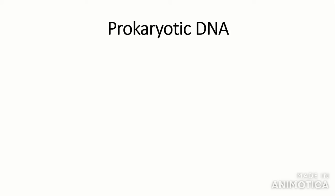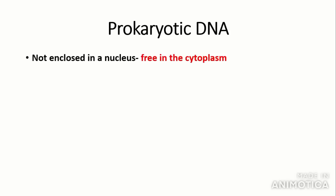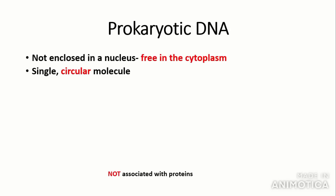We need to talk about prokaryotic DNA as this is very different from eukaryotic DNA. Prokaryotic DNA is not enclosed in a nucleus; it is free in the cytoplasm. This is because a nucleus is a membrane-bound organelle and prokaryotic cells do not contain membrane-bound organelles. Another difference is that it is a single circular molecule and not associated with proteins. It is free-floating in the cytoplasm — that is the key thing to remember: not enclosed in the nucleus.